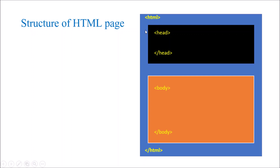After the HTML tag, there is a head and body. The head is represented with the head tag and the body with the body tag. Whatever content you want to display — paragraph, list, or any element — must be written inside the body tag. Whatever is written inside the head will not be displayed on the page.